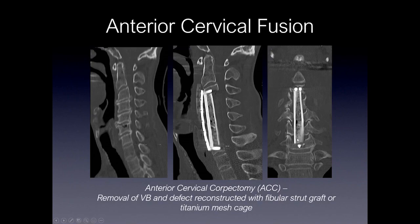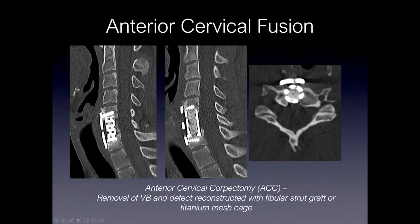And this is what it looks like on the coronal image. Here's an example of a titanium mesh cage — a corpectomy was performed, this cage is placed, and within the cage is bone graft material, which you can see centrally. Also on the axial image, you can see bone graft material, as well as streak artifact from the metallic titanium cage and an anterior plate.